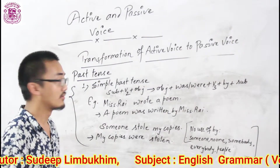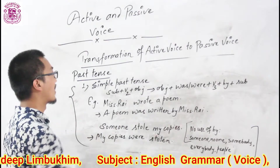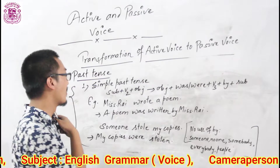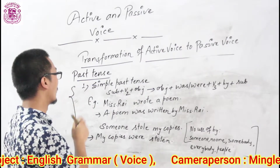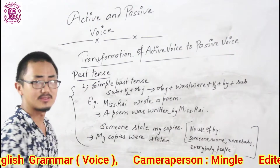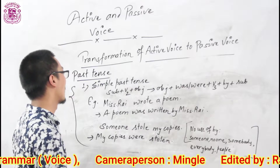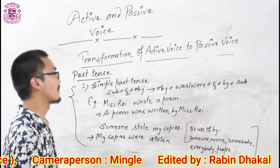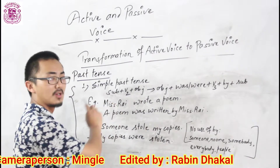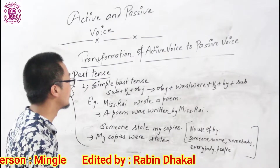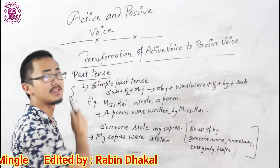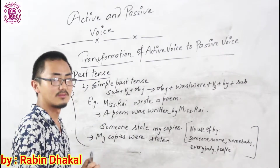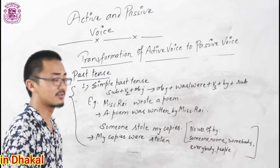The next thing we are going to learn today is about the transformation of active voice to passive voice in case of past tense. We already know there are four structures related to past tense. The first one we are going to learn is about simple past tense. We already know the structure of simple past tense. The structure is: subject plus V2 plus object. So while changing this structure into passive voice, normally some rules are the same, with a little bit of change in case of simple past tense.